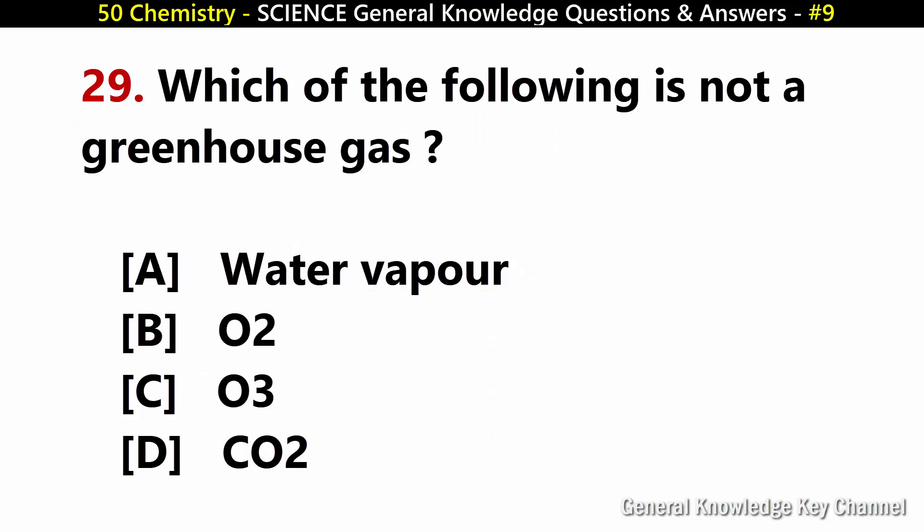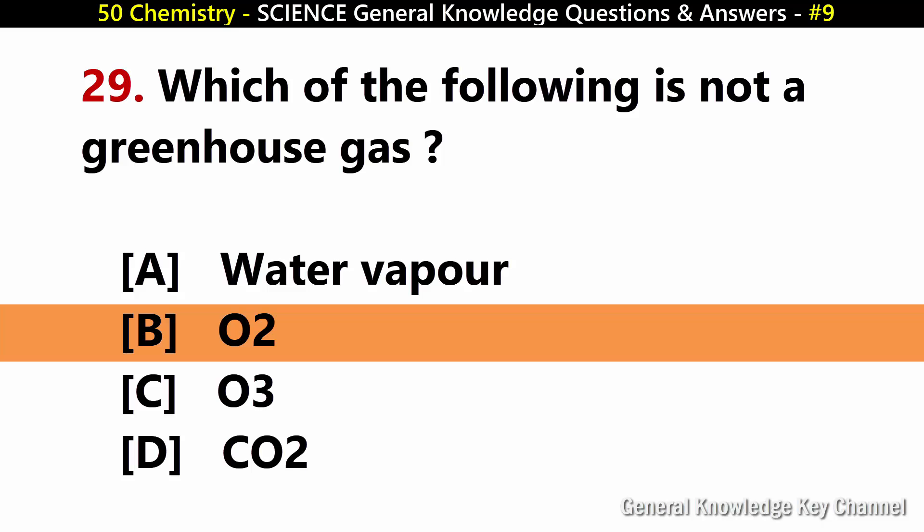Which of the following is not a greenhouse gas? Answer B: Oxygen.